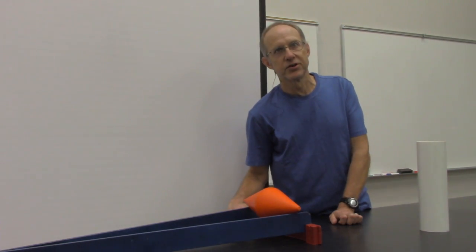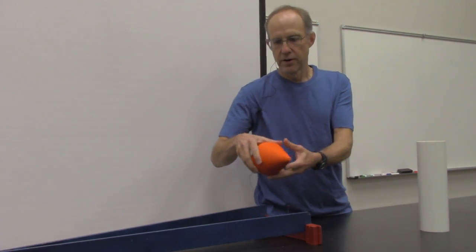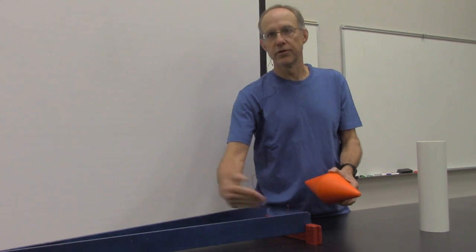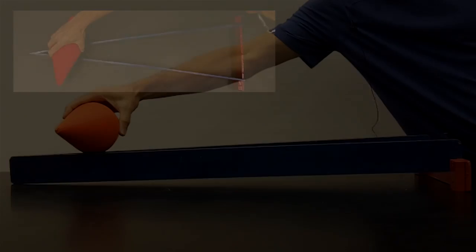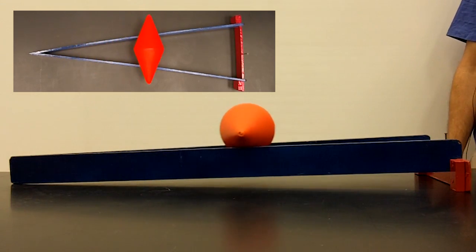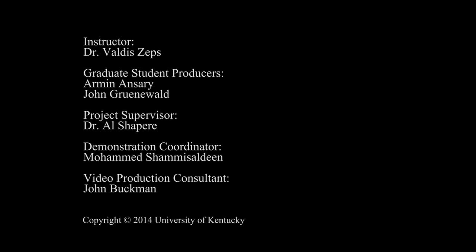But we understand from physics, once again, that it's not really rolling up the hill so much as it's lowering its gravitational potential energy due to the fact that this wedge opens up faster than the cone so that it actually drops its elevation as it moves in this direction.